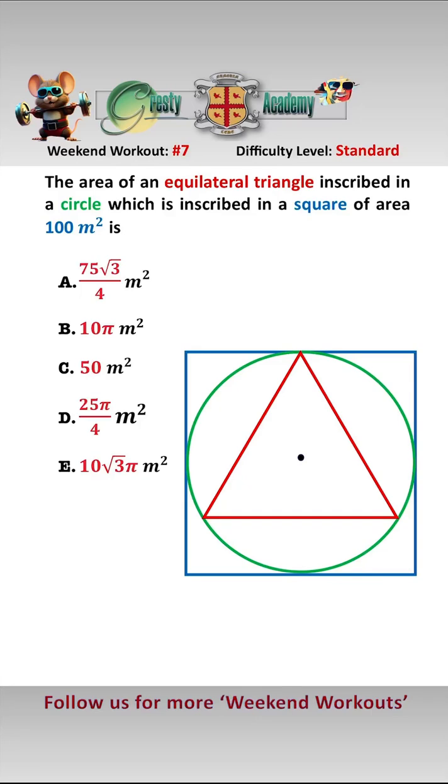As the area of the square is 100 meters squared, that means we know that the length of the square is 10 meters, which means we also know the diameter of the circle is 10 meters, which means that the radius of the circle is half that, which is 5 meters.